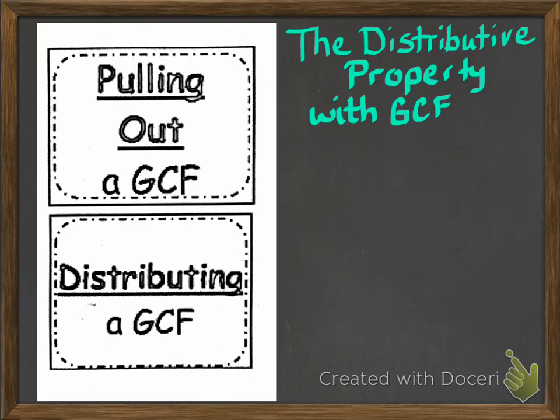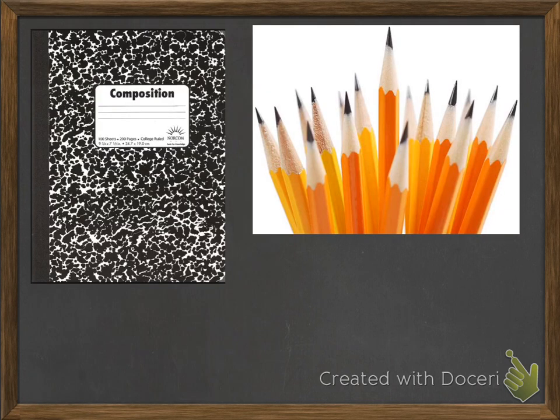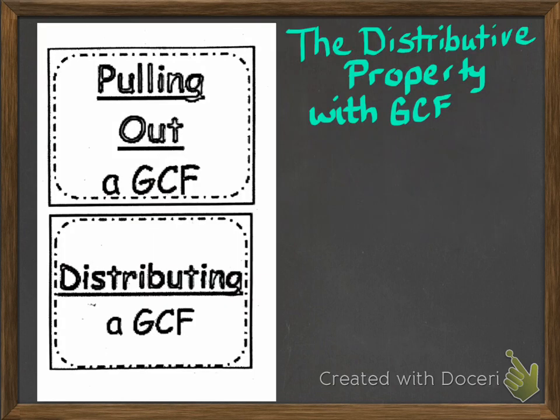Hi, this video is on the distributive property with greatest common factor. You're going to need to have your composition notebook out and a sharpened pencil ready to go before you get started. Turn to the page where you have the handout that says pulling out a GCF and distributing a GCF.